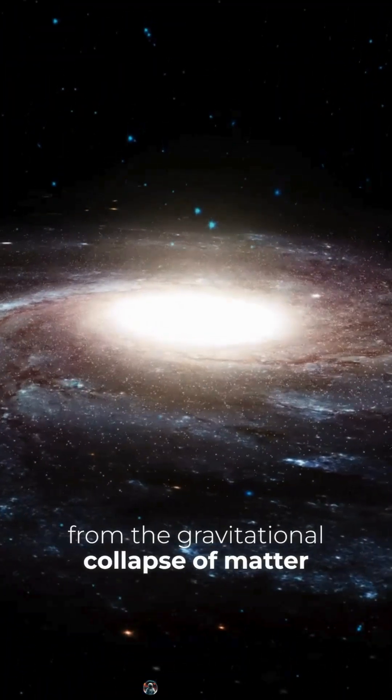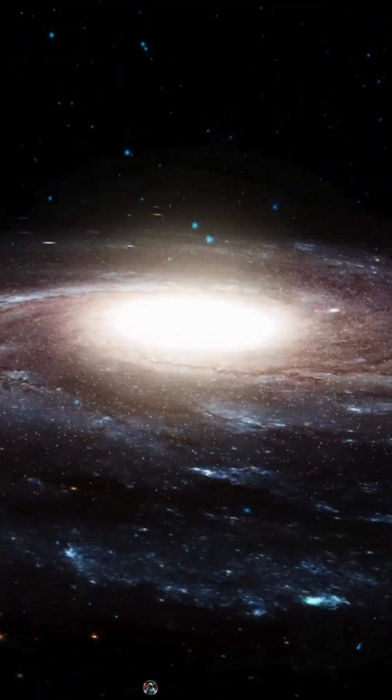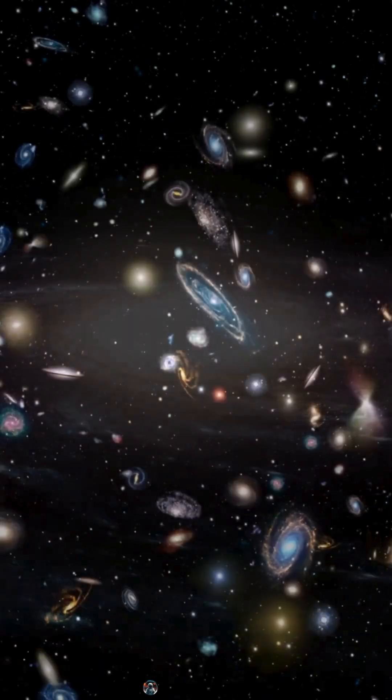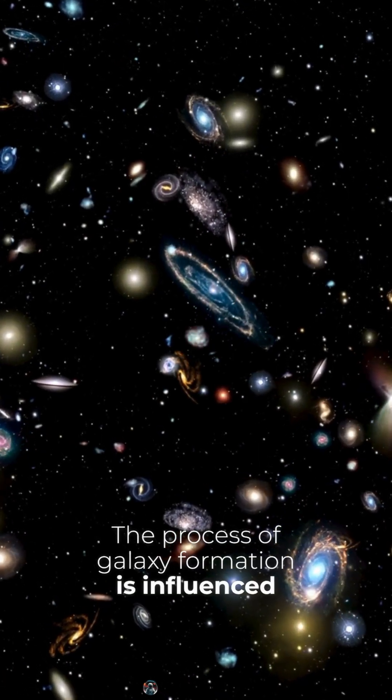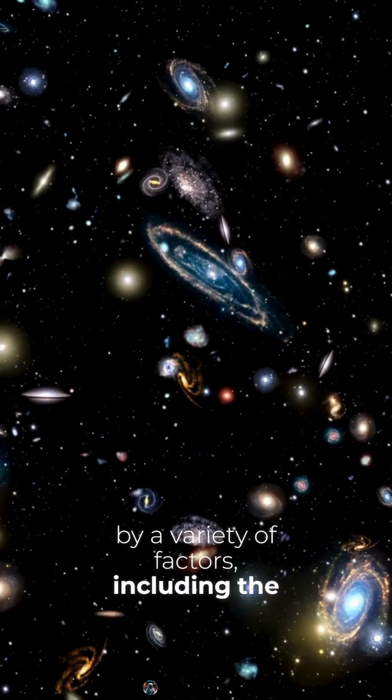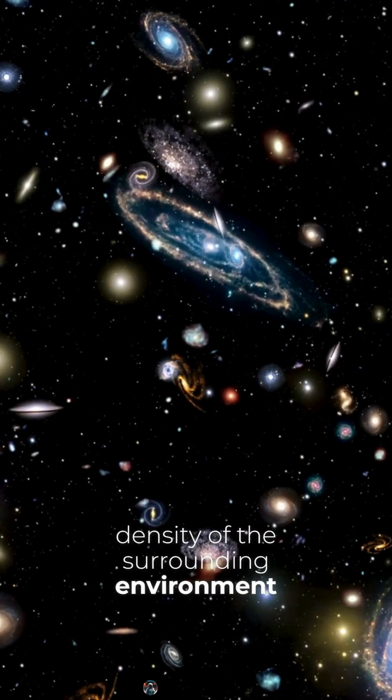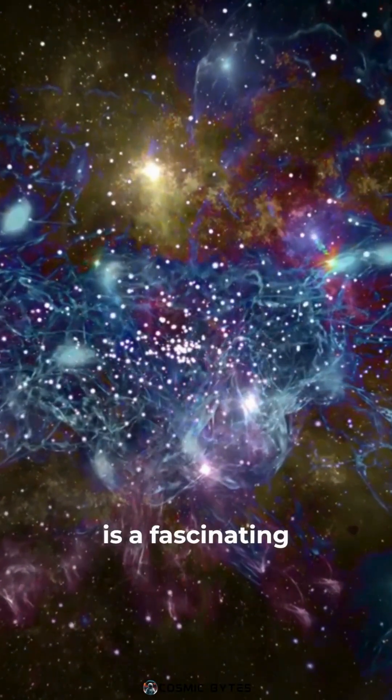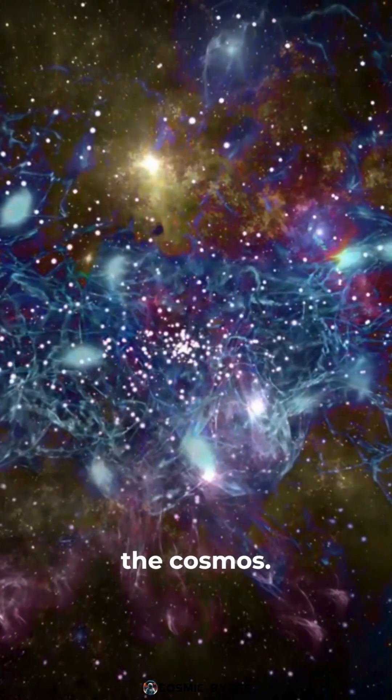Galaxies form from the gravitational collapse of matter in the early universe. This matter can include gas, dust, and dark matter. The process of galaxy formation is influenced by a variety of factors, including the density of the surrounding environment and the presence of other galaxies. Galaxy formation is a fascinating glimpse into the origins of the cosmos.